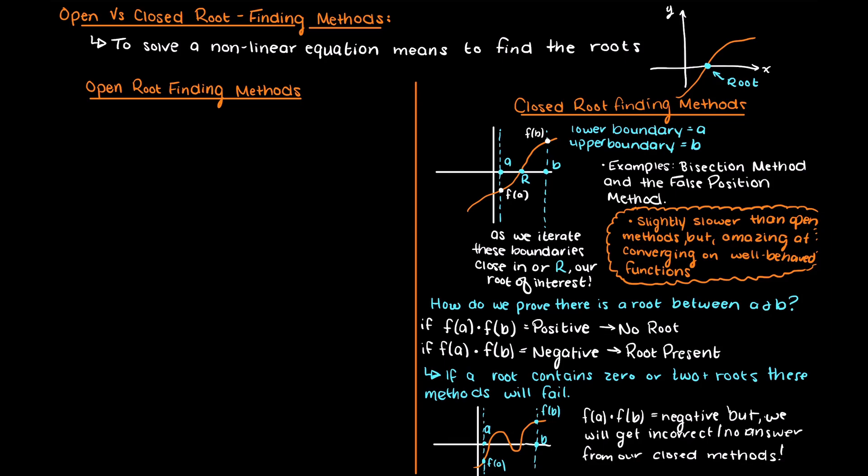In summary, closed root finding methods are found through defining boundaries and then continually closing in on our root. Since these are iterative numerical methods, they give us an approximation of the root to our desired acceptable level of error, and not the exact value.